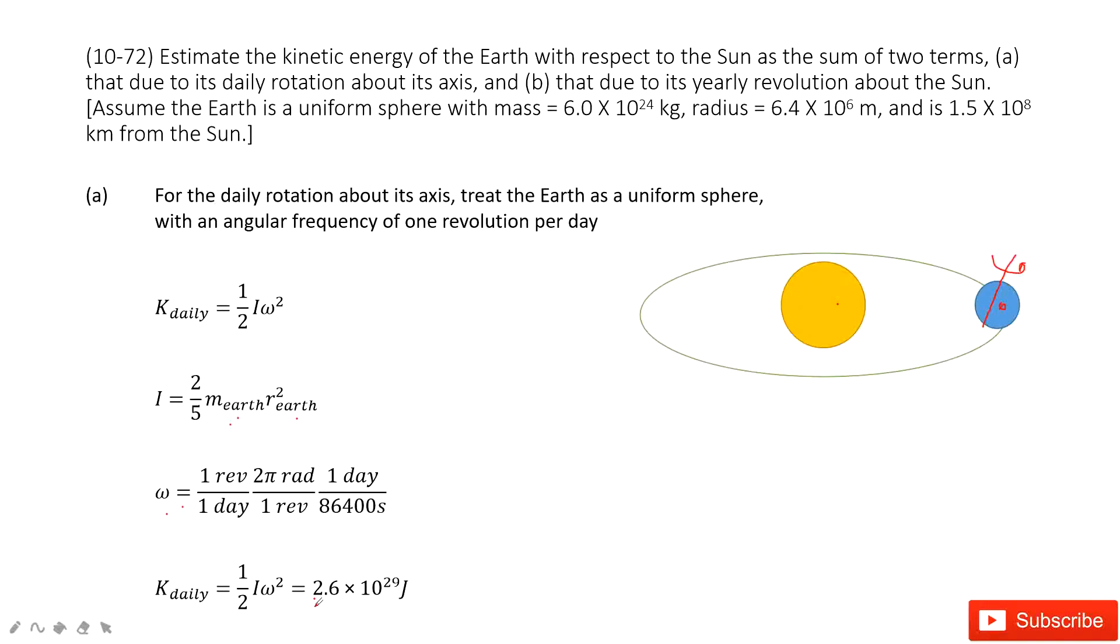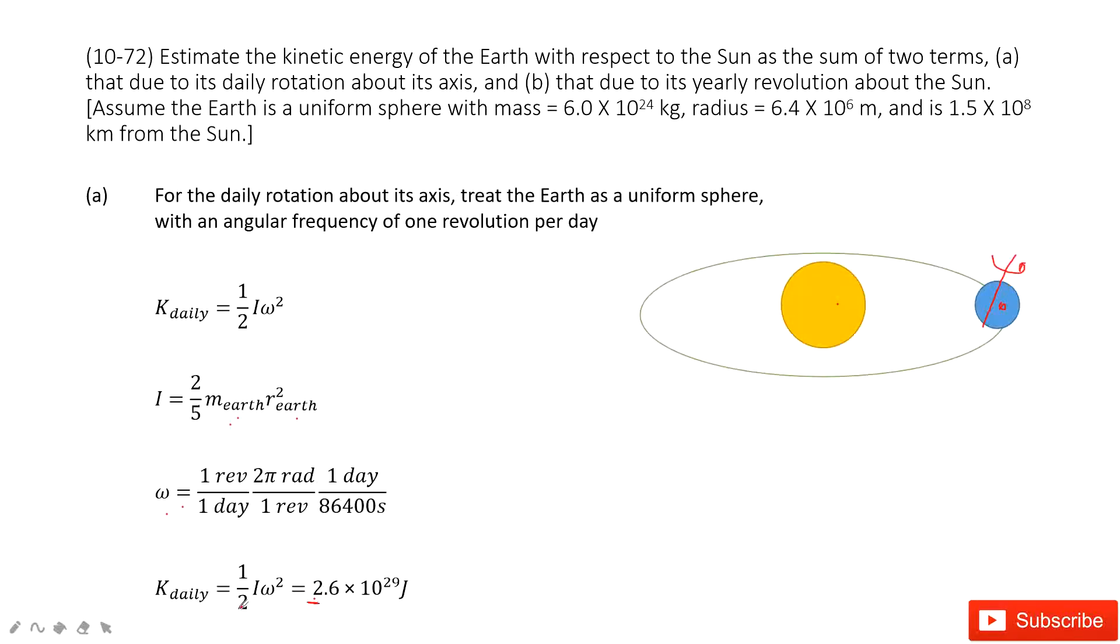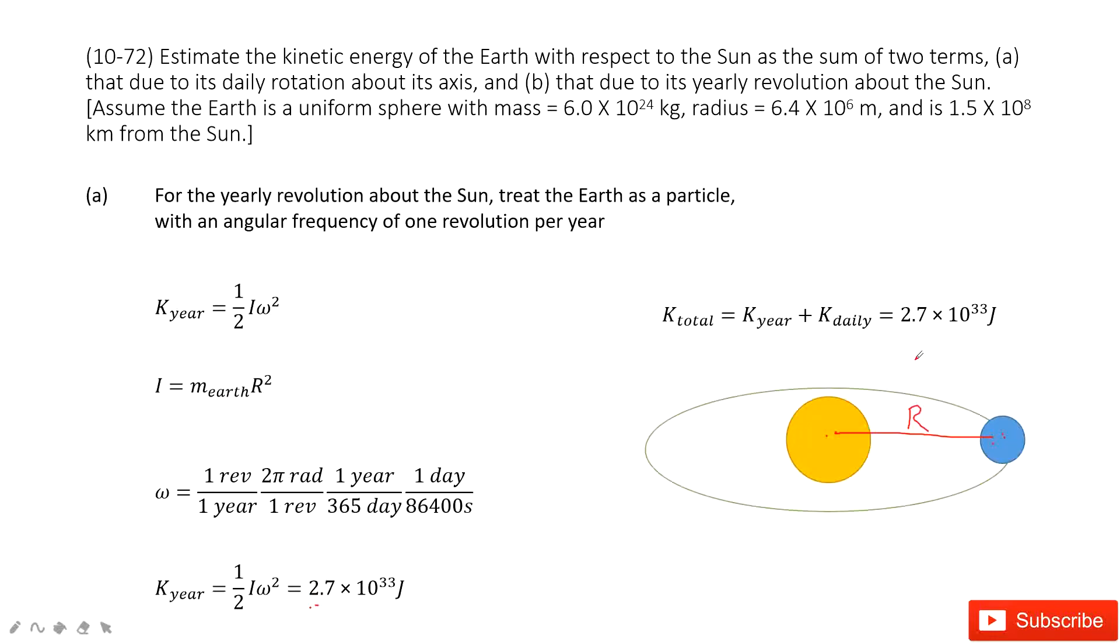Now you can see these two answers. Compare these two answers—very different. So we add the KE daily and KE year together. We can just ignore this part. So finally, the total kinetic energy is very similar, very close to the kinetic energy for the revolution about the Sun. Thank you.